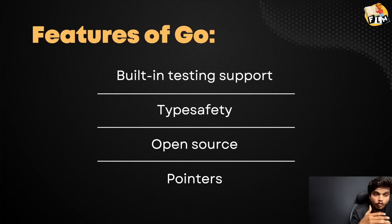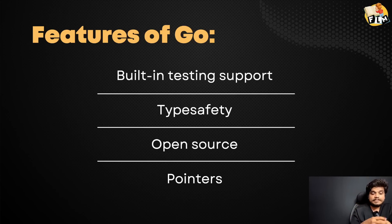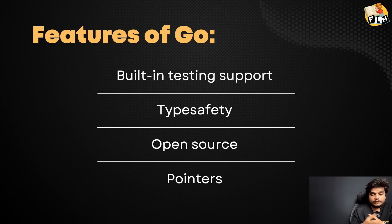Pointers are available in Go. But if we do pointer arithmetic — pointer to pointer — that could lead to some unwanted or unexpected behavior. In Go language security, there are pointers available, but pointer arithmetic is restricted to prevent memory address security issues.